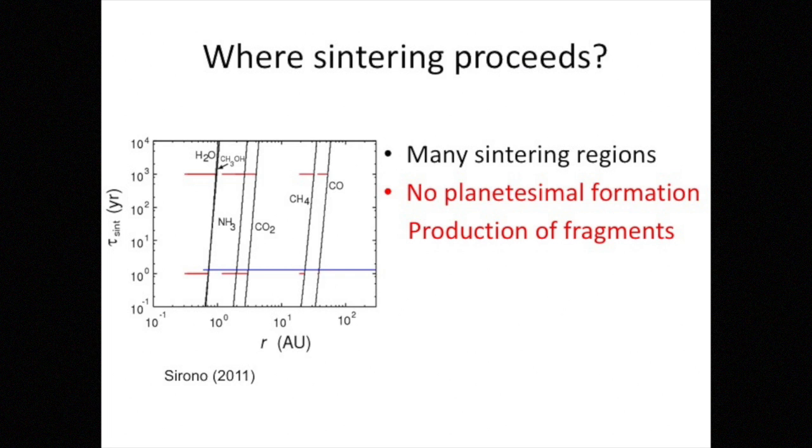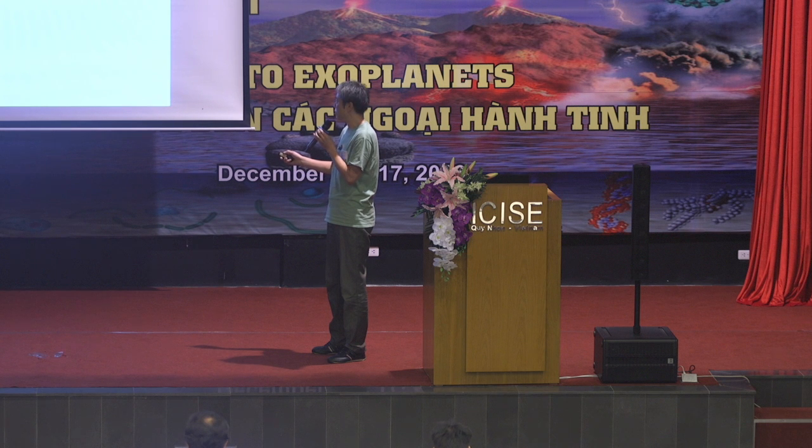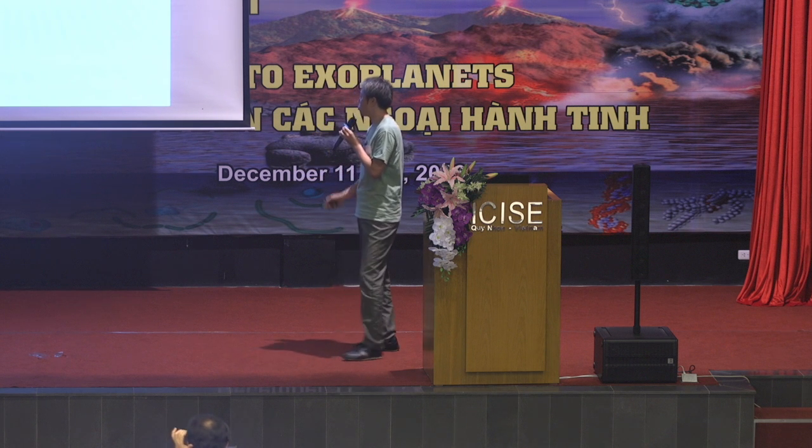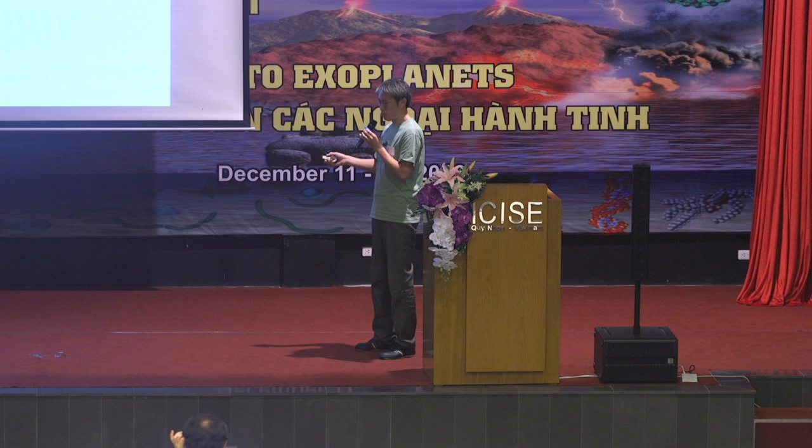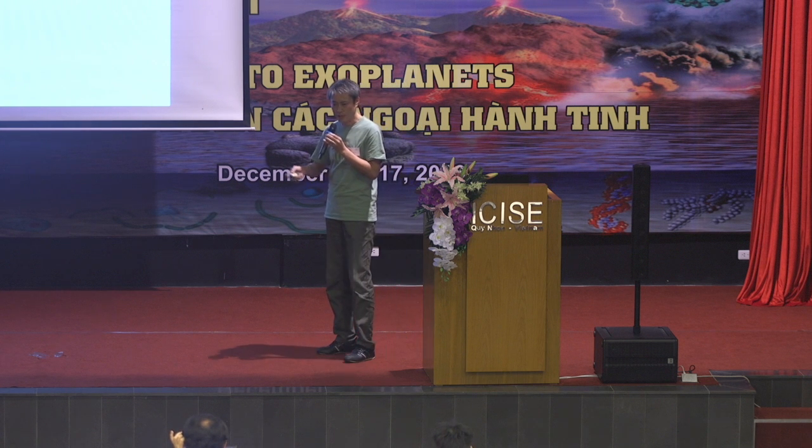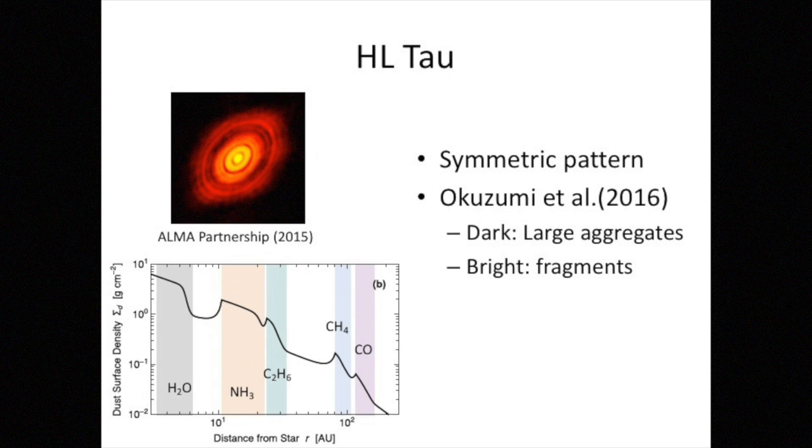So inside these regions, collision growth of an icy aggregate is not possible. And outside the sintering region, the collision growth is possible. So in these sintering regions, no planetesimals can be formed. Instead of planetesimal formation, there should be many tiny fragments.